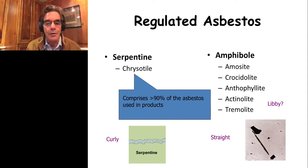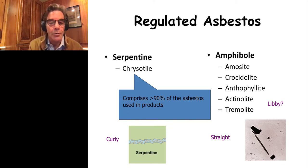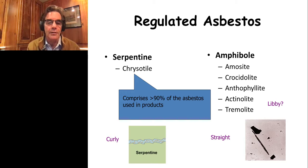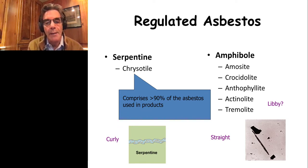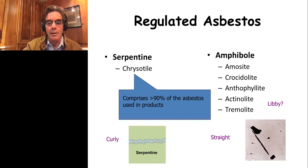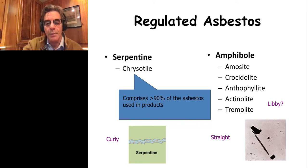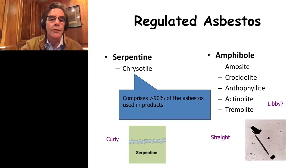Here are the six types of regulated asbestos — this is still true today. There are two main types: a serpentine or snake-like asbestos called chrysotile, which makes up more than 90% of the asbestos used in most products throughout our country. And there's an amphibole type, made up of many different mineral forms — five of them are regulated. We suspected some of these, including actinolite and tremolite, might be present in Libby, but we had to prove that forensically.